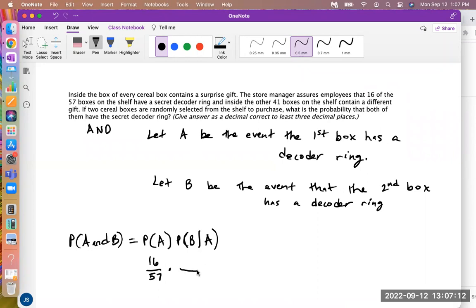Well, now there's one less decoder ring or box with a decoder ring at least. So now you have 15 boxes left with decoder rings. And then you also have less of the boxes on the shelf completely. So it's 15 out of 56 is going to be your probability for the second one getting a decoder ring as well.